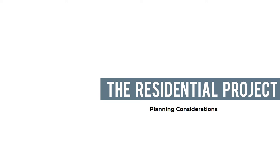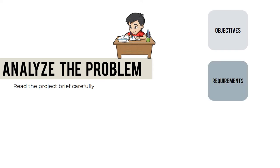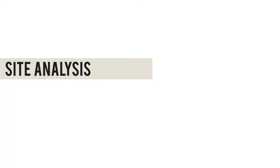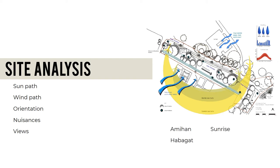Residential project planning considerations begin with analyzing the problem: read the project brief carefully, identify the objectives and given requirements, and conduct a SWOT analysis. Site analysis involves identifying the sun path, wind path, orientation, seasons, and views — as well as the strengths, weaknesses, opportunities, and threats that might affect the project. You should also consider Amihan, Habagat, Sunrise, and Sunset.